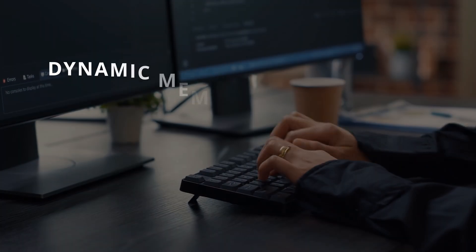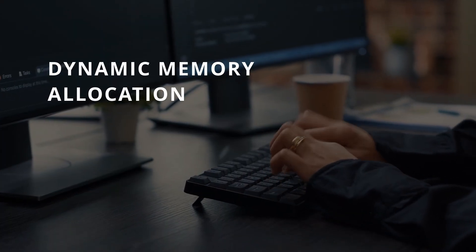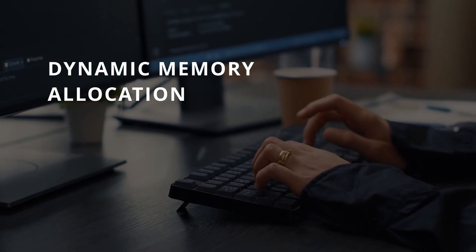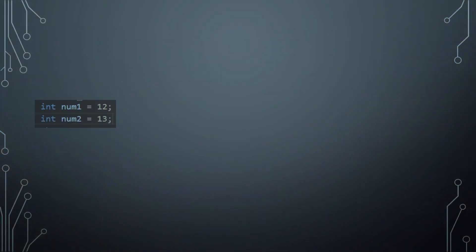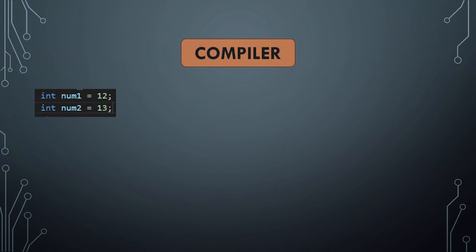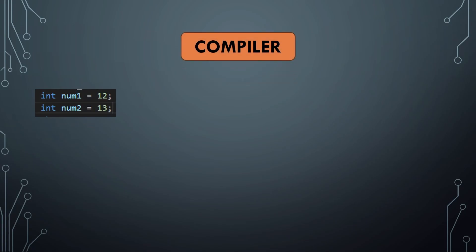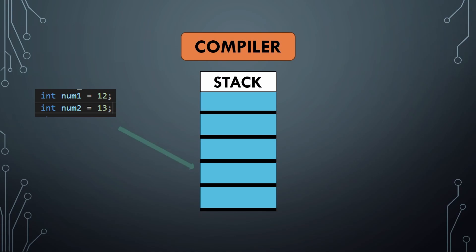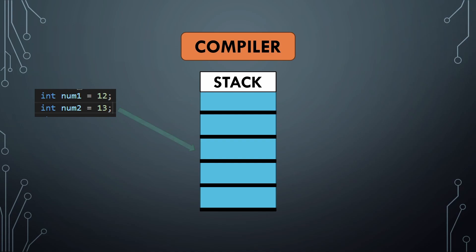In today's video we will discuss a very important concept called dynamic memory allocation. Normally when we create a variable, the compiler allocates space inside memory to store the value, and it will also deallocate that space when needed. When we create a variable or an array, this all happens during compile time.